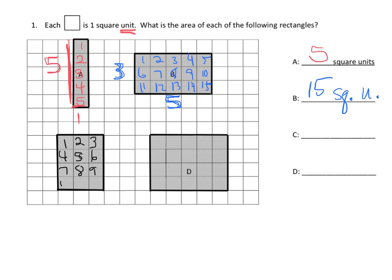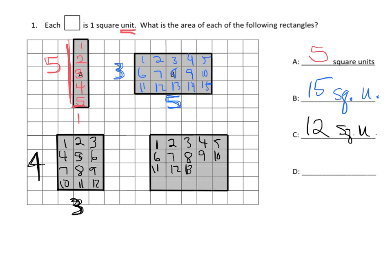Rectangle A was five units tall and one unit wide, giving five square units. For rectangle C, counting one through twelve — rectangle C is twelve square units. It was four units tall and three units wide, so four times three is twelve. For rectangle D, counting one through twenty — rectangle D has twenty square units. You can skip count: five, ten, fifteen, twenty. It's five units across and four units high, so five times four is twenty.